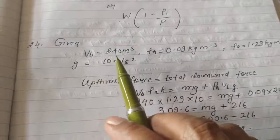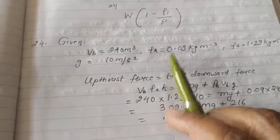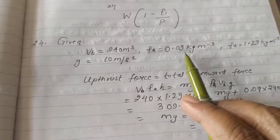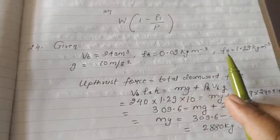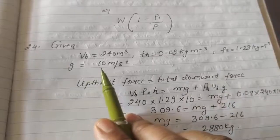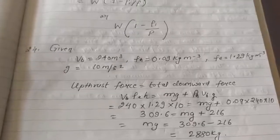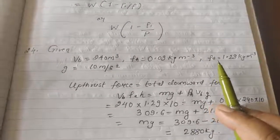Volume of balloon is 240, density of hydrogen is 0.09, and this is given, gravity 10 meter per second, and this is density of air 1.29.